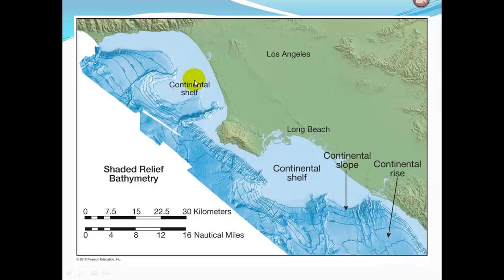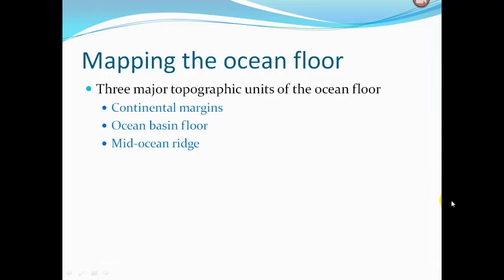Here we have the continental shelf — a nice flat area. Then the slope coming off the shelf is the continental slope. Then we have the continental rise, which is sloped but at a much shallower angle. There are three major topographic units of the ocean floor: the continental margins, the ocean basin floor, and the mid-ocean ridge.